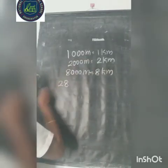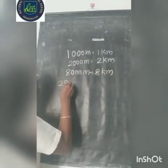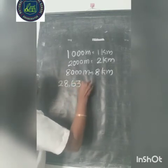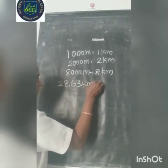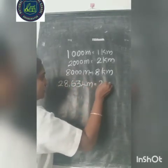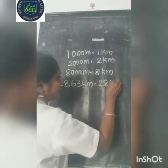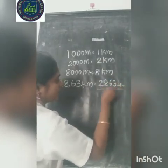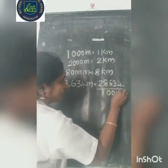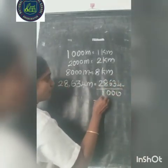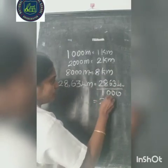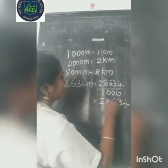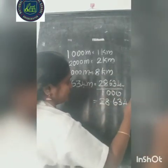What about 28,634 meter? 28,634 meter divided by 1000 equals 28.634 kilometer.